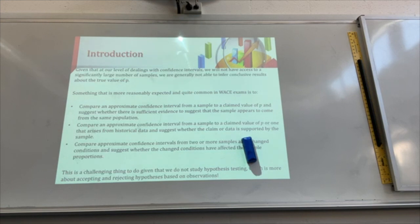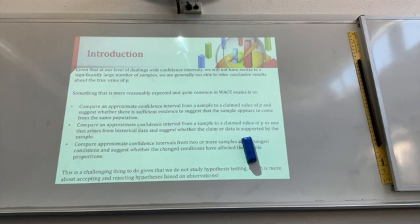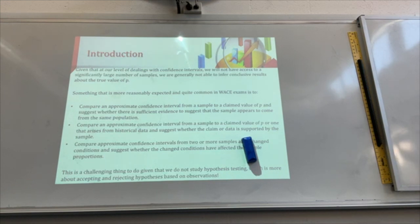You'll probably be asked to compare an approximate confidence interval from the sample to a claimed value of P, or one that arises from historical data, and suggest whether the claim or the data is supported by the sample. Finally, compare approximate confidence intervals from two or more samples after a change in condition — for example, collecting a sample for three months, then running a campaign.